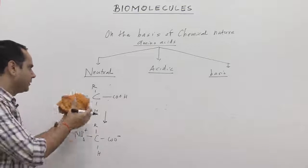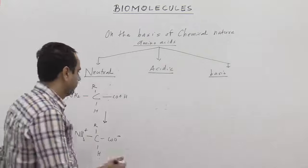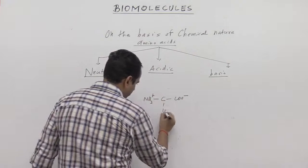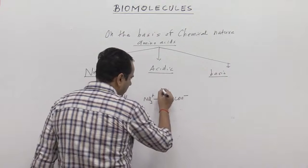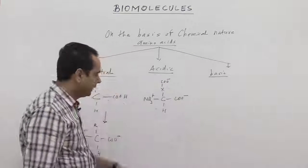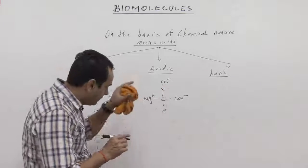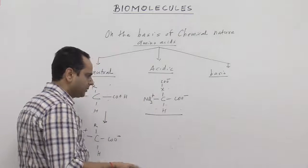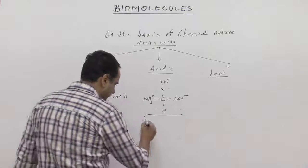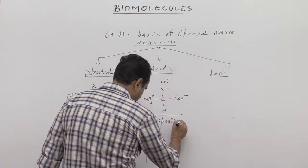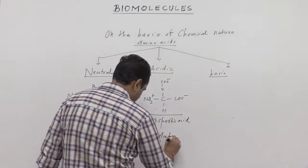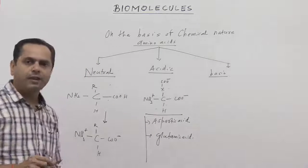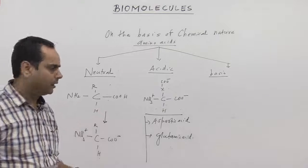It is easy to remember: first identify acidic and basic, and the remaining become neutral amino acids. If the side chain R group contains some additional negative charge, it is an example of an acidic amino acid. There are only two examples: aspartic acid and glutamic acid. Aspartic acid and glutamic acid are the examples of acidic amino acids.